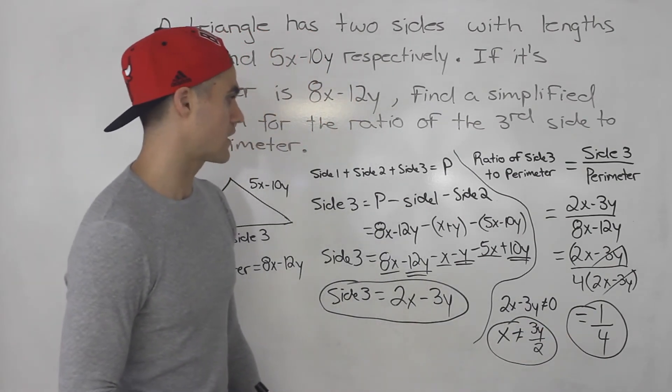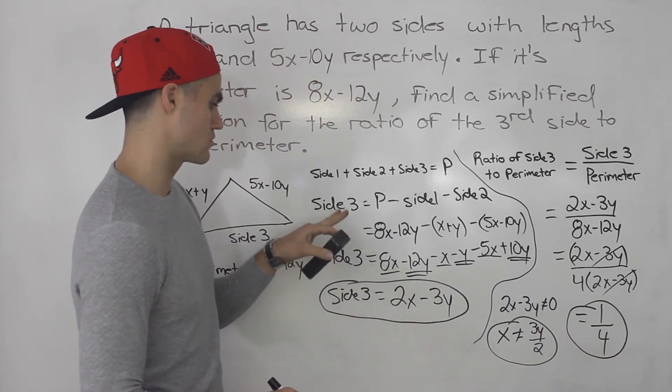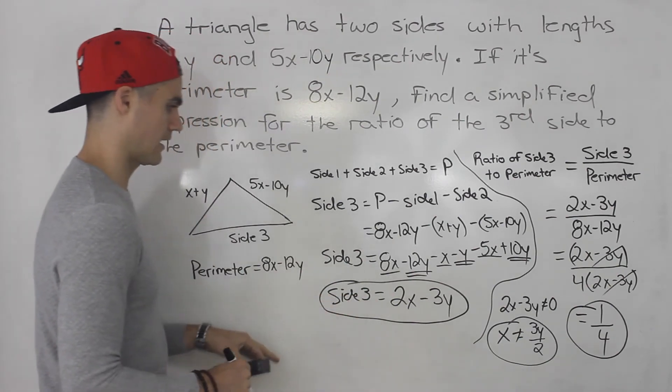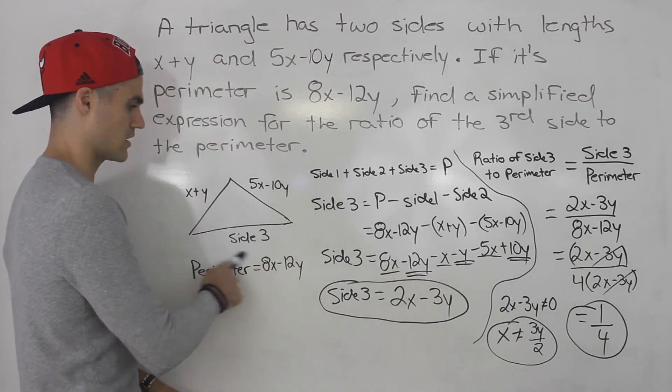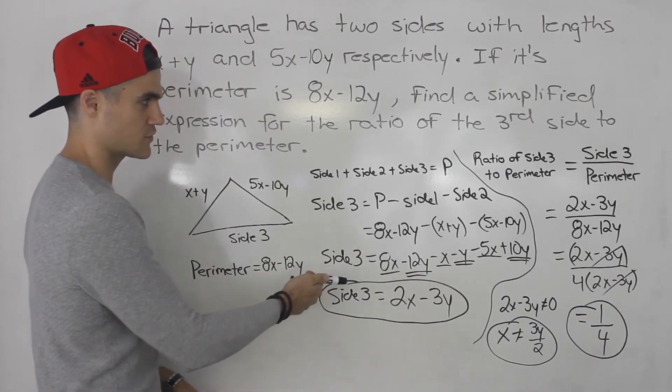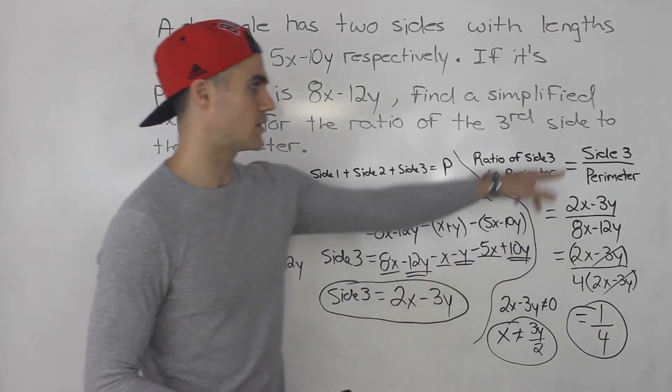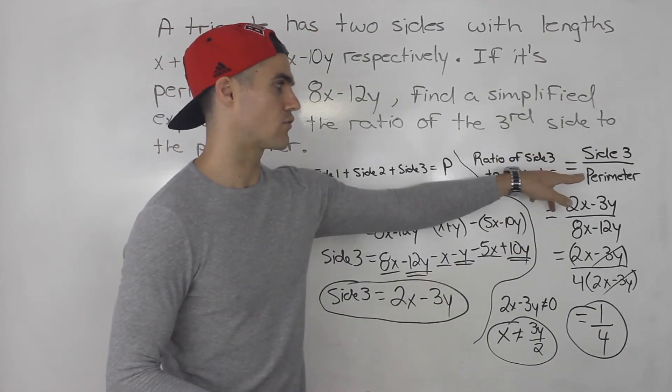And that's it, that's the final answer. So first you want to get an expression for side 3. Then once you have an expression for side 3, you could put side 3 over the perimeter.